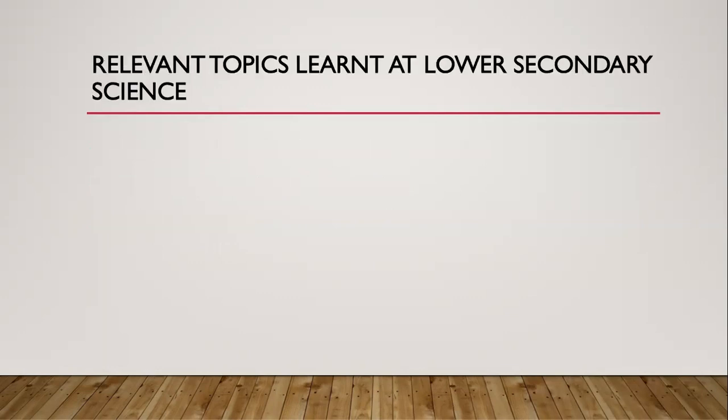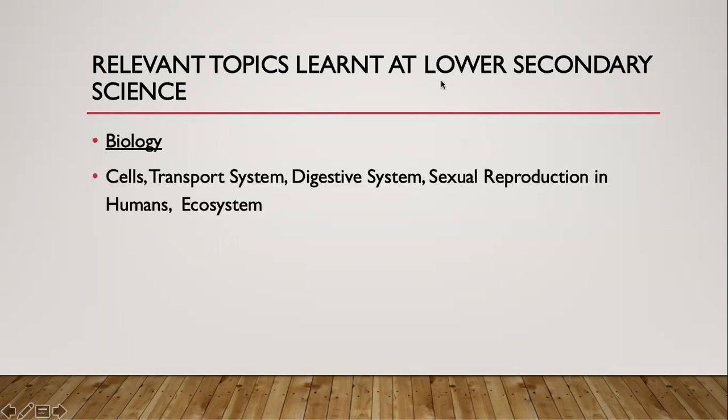What are the relevant topics learned at lower secondary science? For biology, they are cells, transport system, digestive system, sexual reproduction in humans, and ecosystem. At upper secondary biology and later on at A level, you will learn much more. So if you have been exposed to these topics and kind of enjoy them, then you may consider biology.